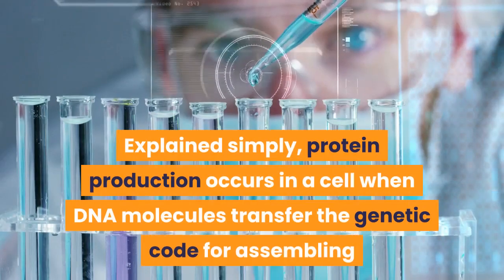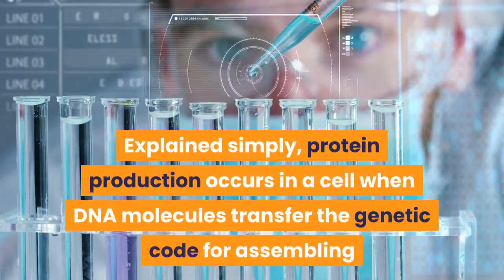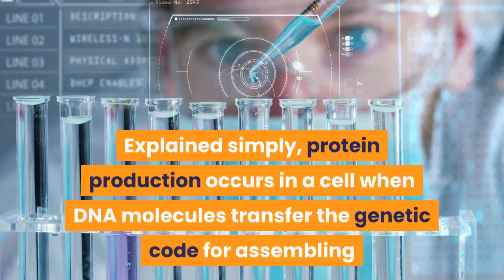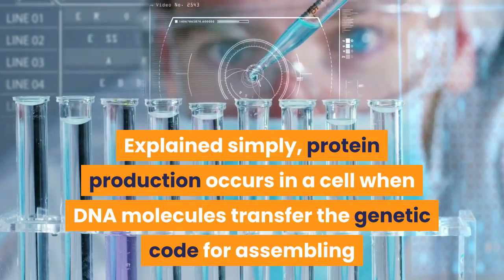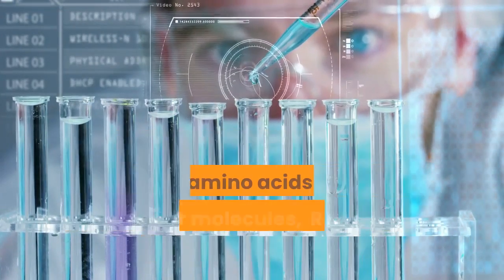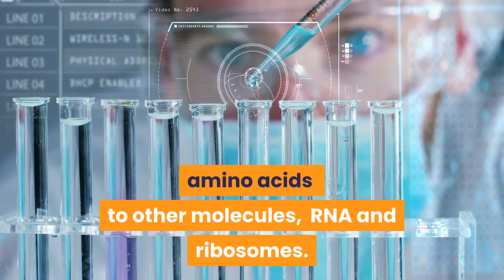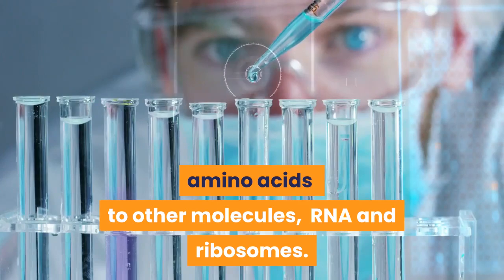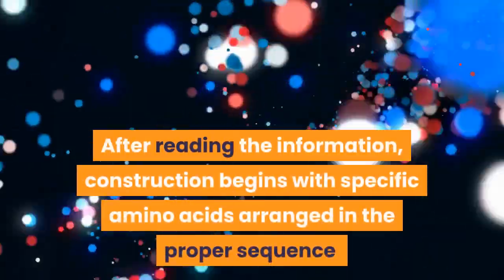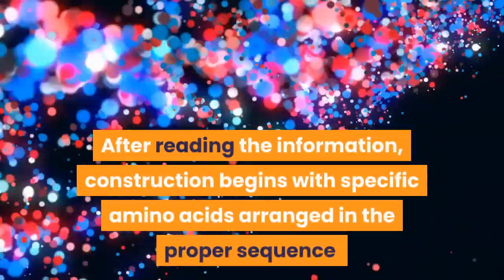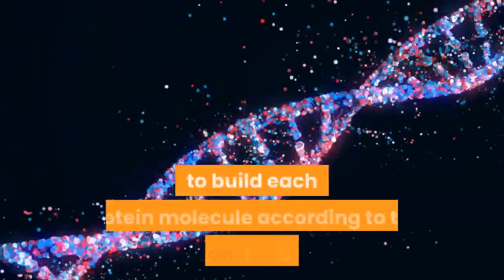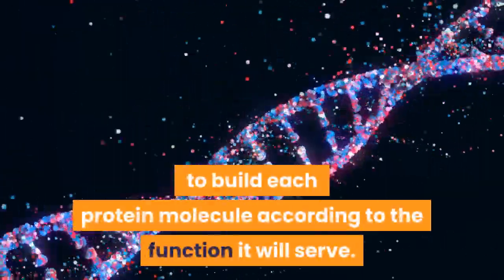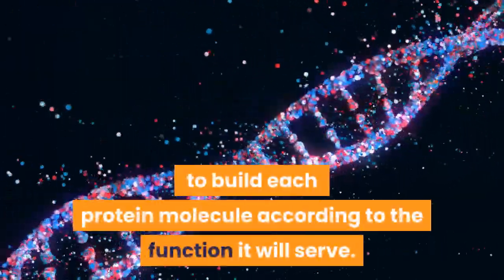Explained simply, protein production occurs in a cell when DNA molecules transfer the genetic code for assembling amino acids to other molecules — RNA and ribosomes. After reading the information, construction begins with specific amino acids arranged in the proper sequence to build each protein molecule according to the function it will serve.